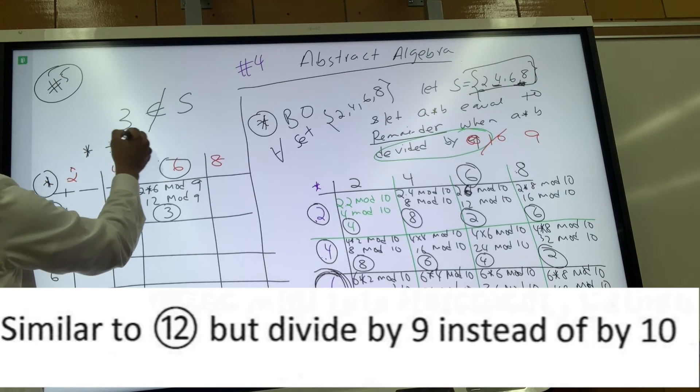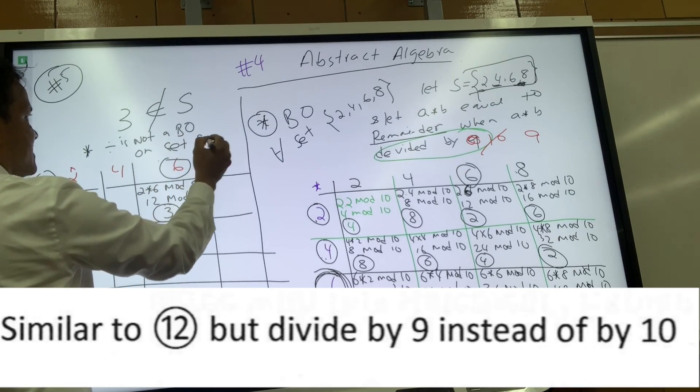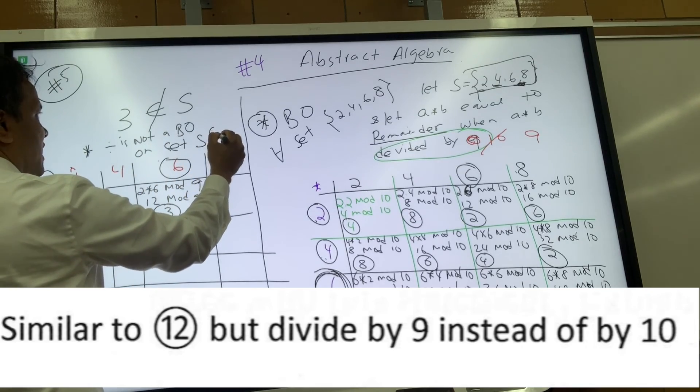So we can conclude that the star operation in set S, which is {2, 4, 6, 8}, is not a binary operation.